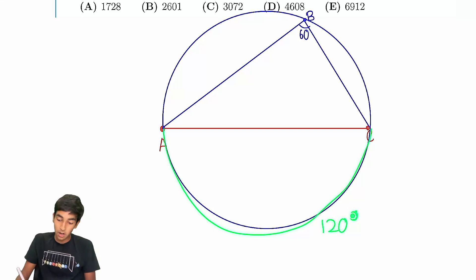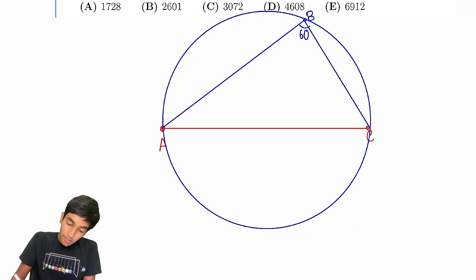If this is a 120 degree arc, I know it doesn't look like that, but hopefully you just take my word for it here. This, any point here, will satisfy this thing is 60, by inscribed angle theorem.